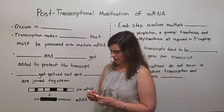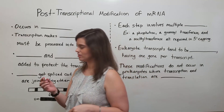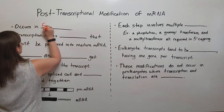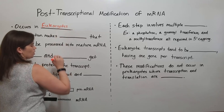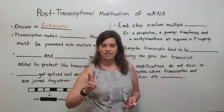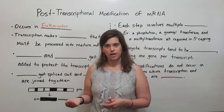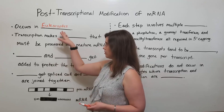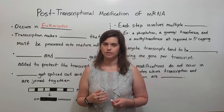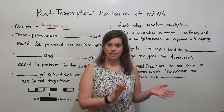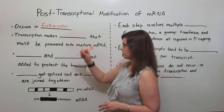First, let's talk about where this process happens. It happens in eukaryotic cells. Remember that there are two major cell types that all life in the world is one or the other — eukaryotes and prokaryotes. Today we're talking about eukaryotes, which are animal cells, plant cells, fungal cells, and algal cells, and not bacteria or archaea cells. So post-transcriptional modification of mRNA happens in eukaryotes.